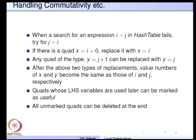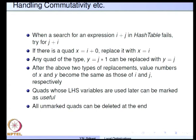It is possible to exploit the commutativity of operators. If we have an expression j+i in the hash table and we try searching for i+j, we search for i+j, it fails, then try searching for j+i — maybe j+i was already present in the table and i+j was not, but plus is commutative. So whether we use i+j or j+i the value remains the same; we can conclude that i+j and j+i are equivalent in all cases. So they can be deemed as equivalent and given the same value number.